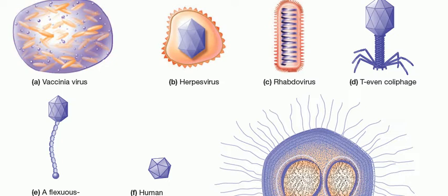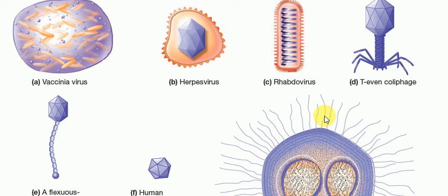Here in this video, we are showing you a very important image for molecular genetics. You can see various viruses: the first is vaccinia virus, second is herpes virus, then rhabdo virus, then T-even coliphage, flexuous tail phage, papilloma virus, and one more virus.